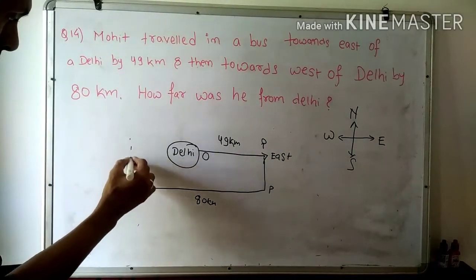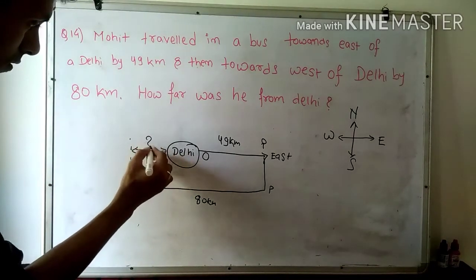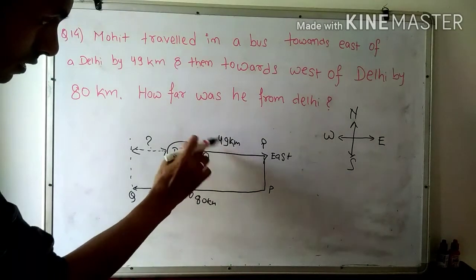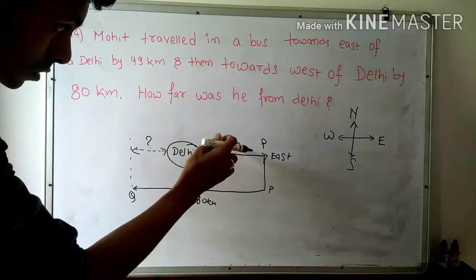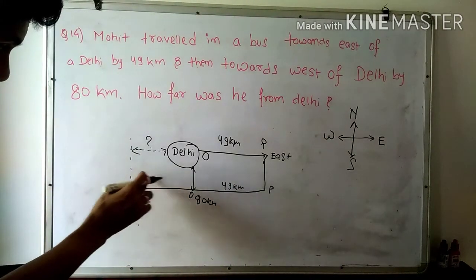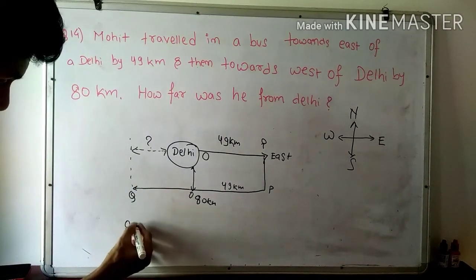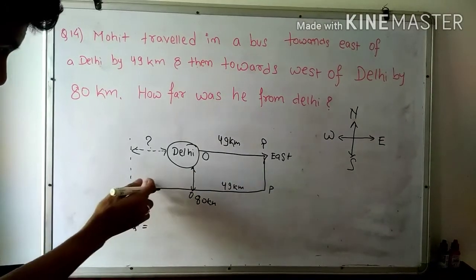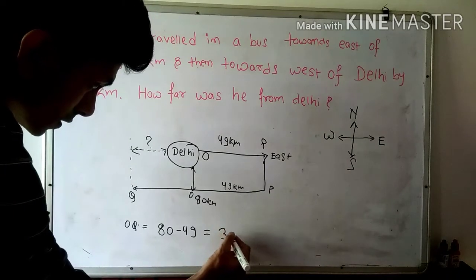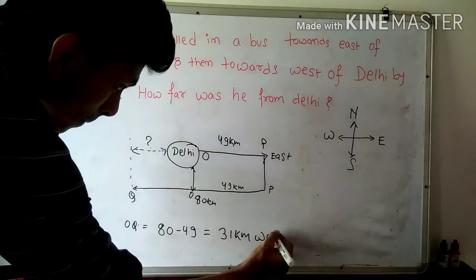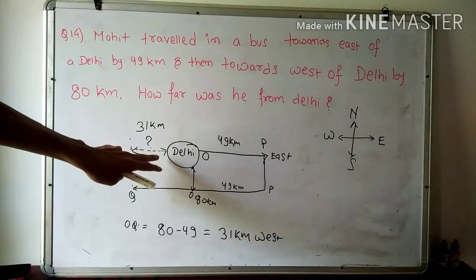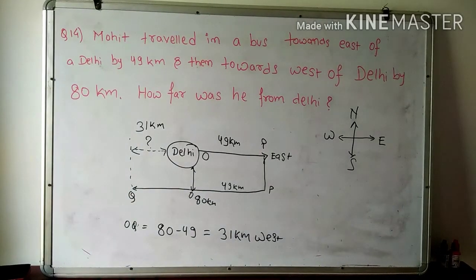Taking O as the center, that is Delhi, the distance covered from Delhi to point P is 49 km. Now we have to find the remaining distance OQ. We find OQ by subtracting: 80 minus 49 equals 31 km. That is the remaining distance — 31 km. And Rohit is in the west direction. I hope you got the solution very well.